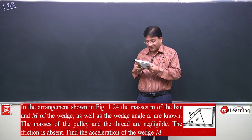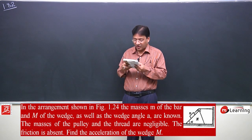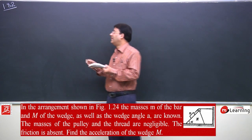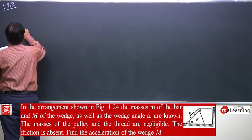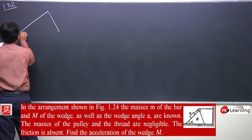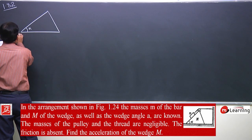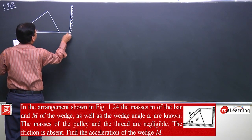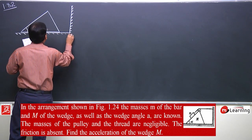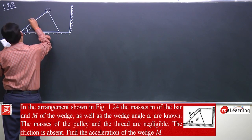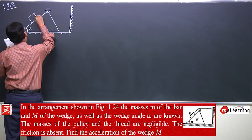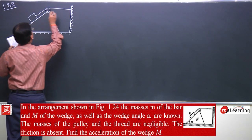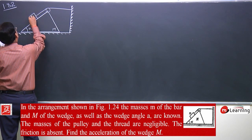Let us read the problem statement. There is a figure associated with the problem statement and I will draw the figure also. In the arrangement shown in figure 1.24, a prism looks something like this, with angle alpha given. There is a horizontal and a vertical wall and here we have got a pulley. There is a block and a thread tied to this block running over the pulley and attached to this vertical wall.